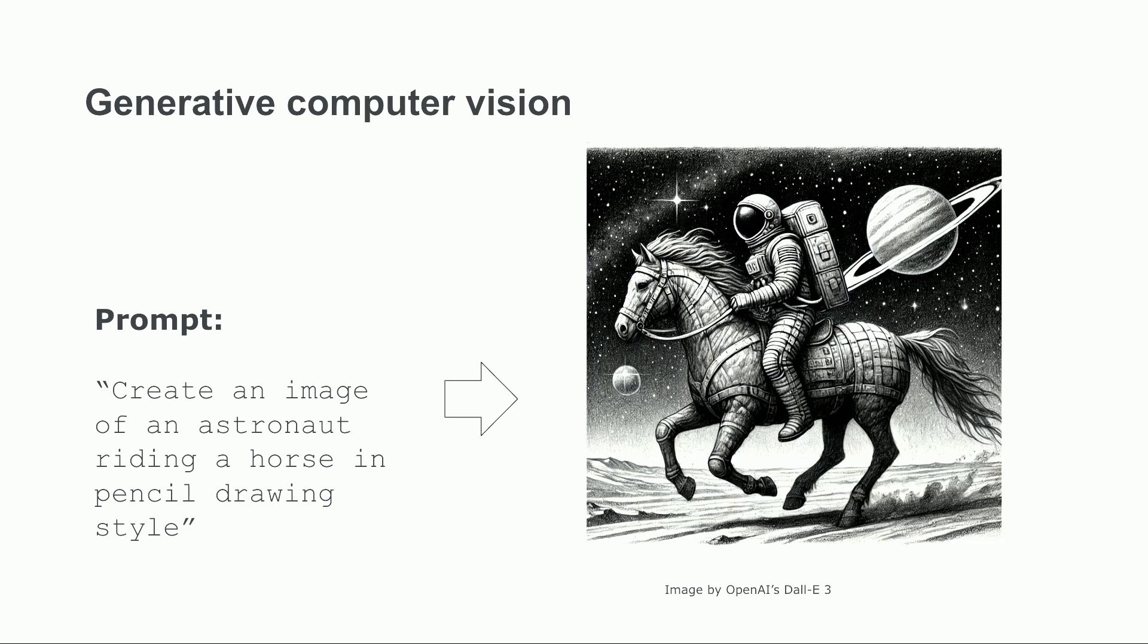Models like DALI and Stable Diffusion learned through supervised training on millions of image-text pairs, along with specialized generation techniques, like denoising diffusion. When given a prompt like, create an image of an astronaut riding a horse in pencil drawing style, these models generate new images by gradually refining random noise into coherent images that match the description. They do this using the learned understanding of visual and textual concepts and their relationships.